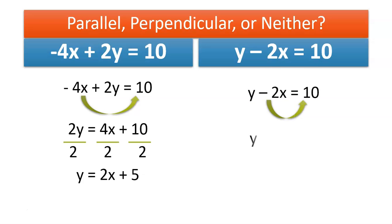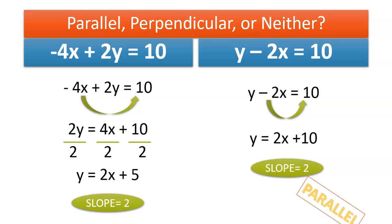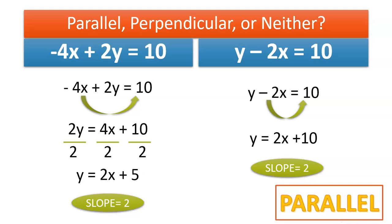The other one, I'm going to move my x to the other side. It now becomes positive. And I have y = 2x + 10. And you'll notice in both of the equations, the slope is 2. Therefore, these two lines are parallel.